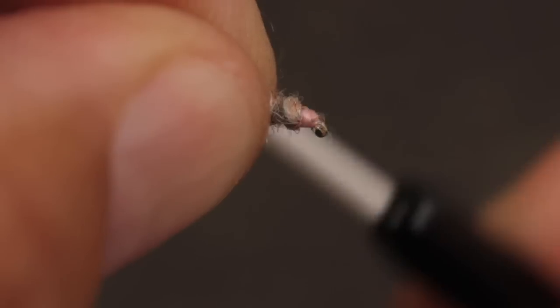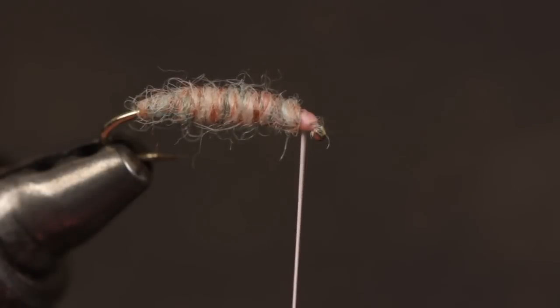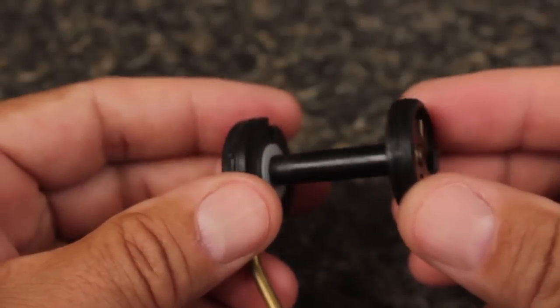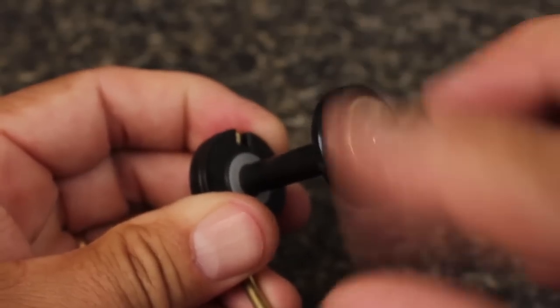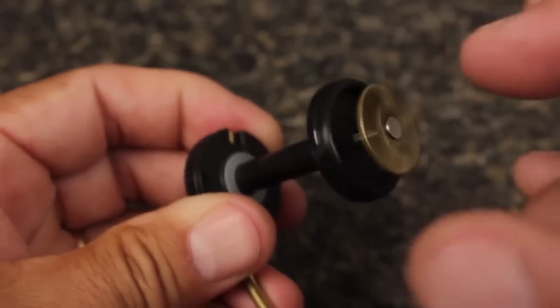At the core of every RITE bobbin is its unique click drag adjustment system. The cross-shaped tensioning knob is rotated counterclockwise to remove the threaded drag assembly. Keep one nylon washer with the drag assembly and leave the other on the bobbin axle.